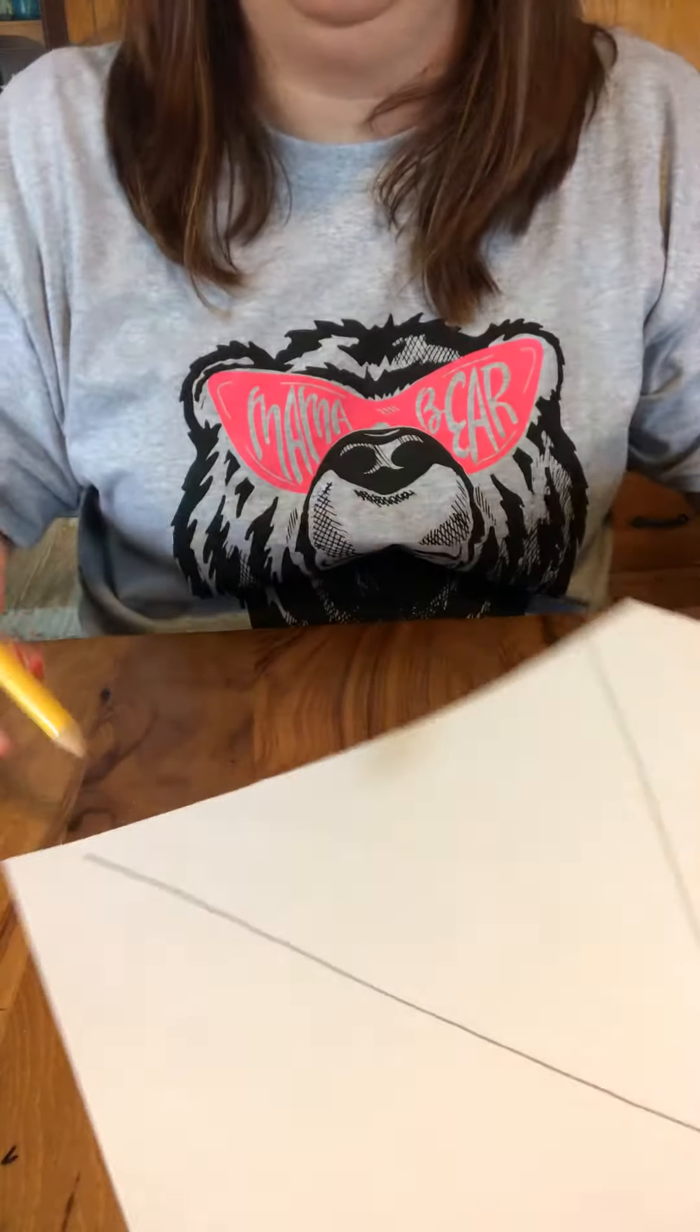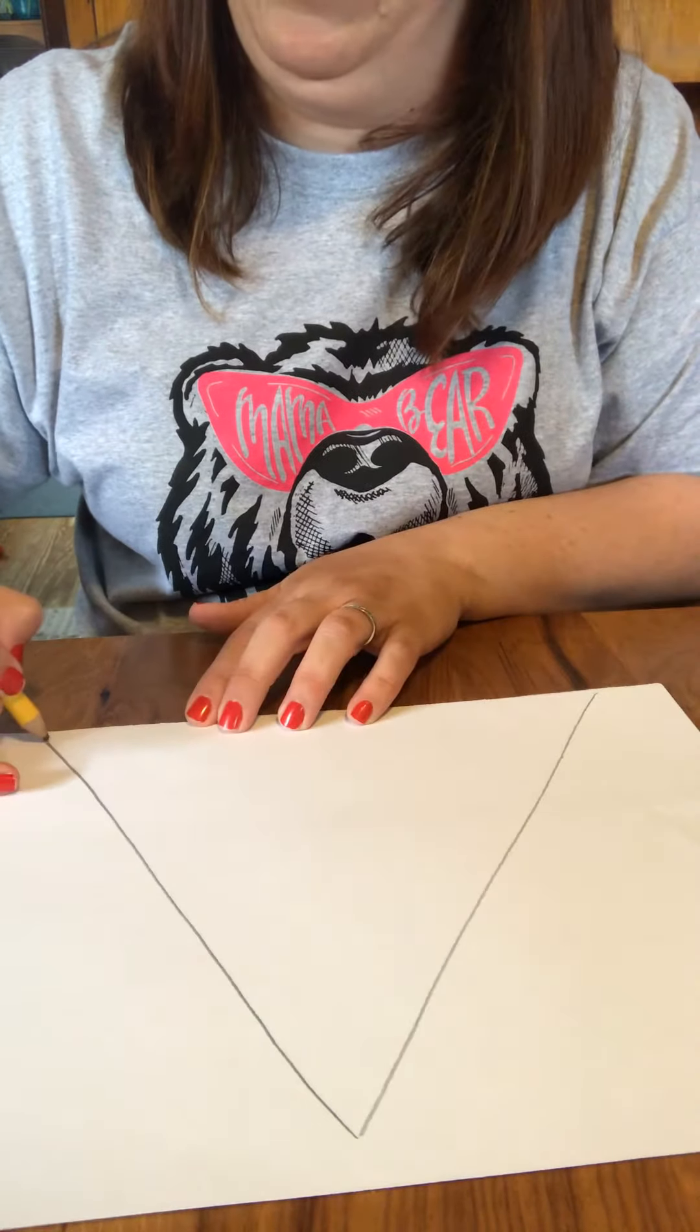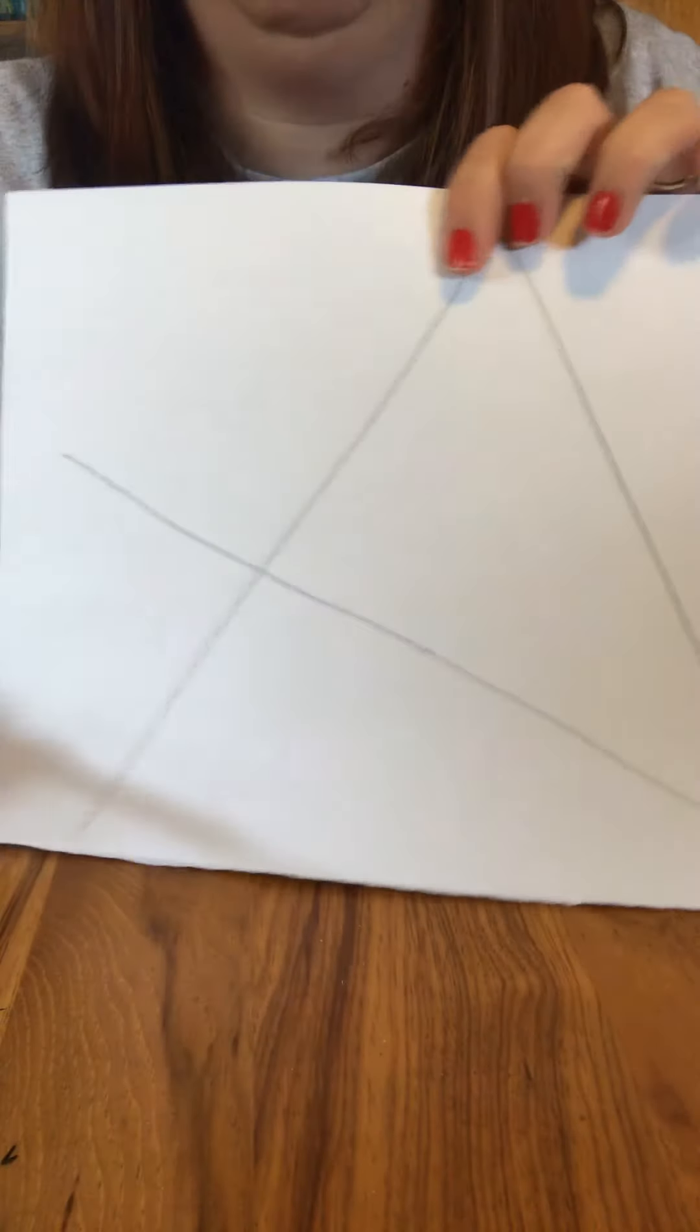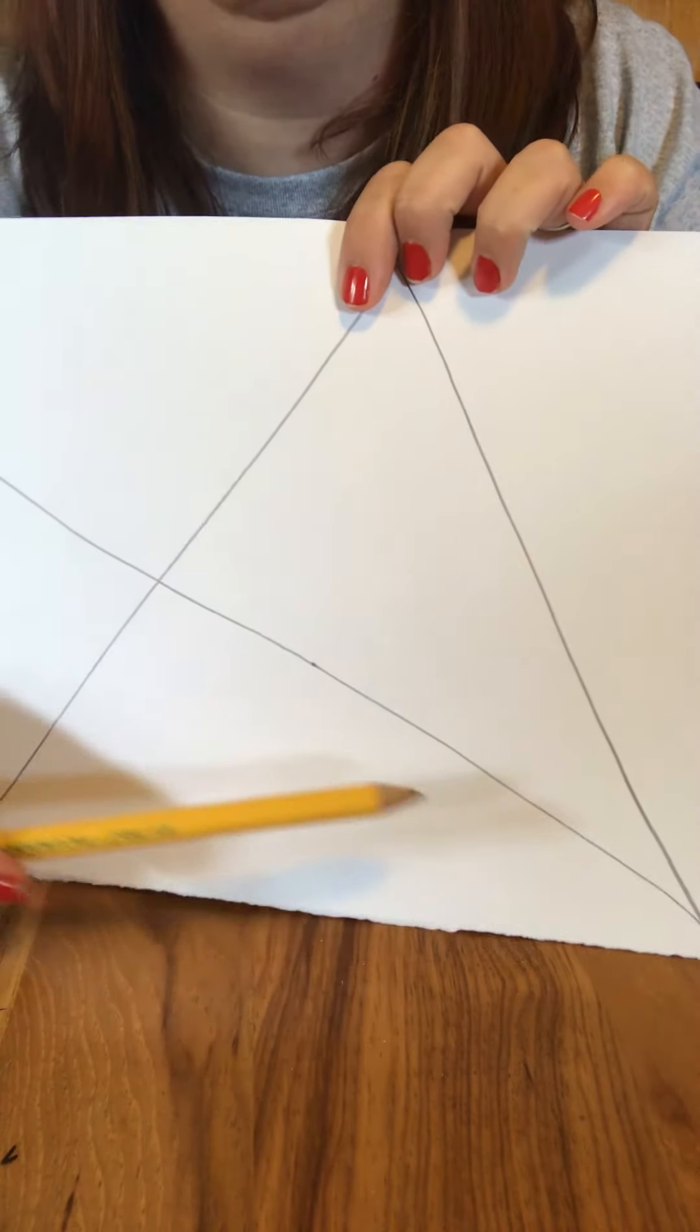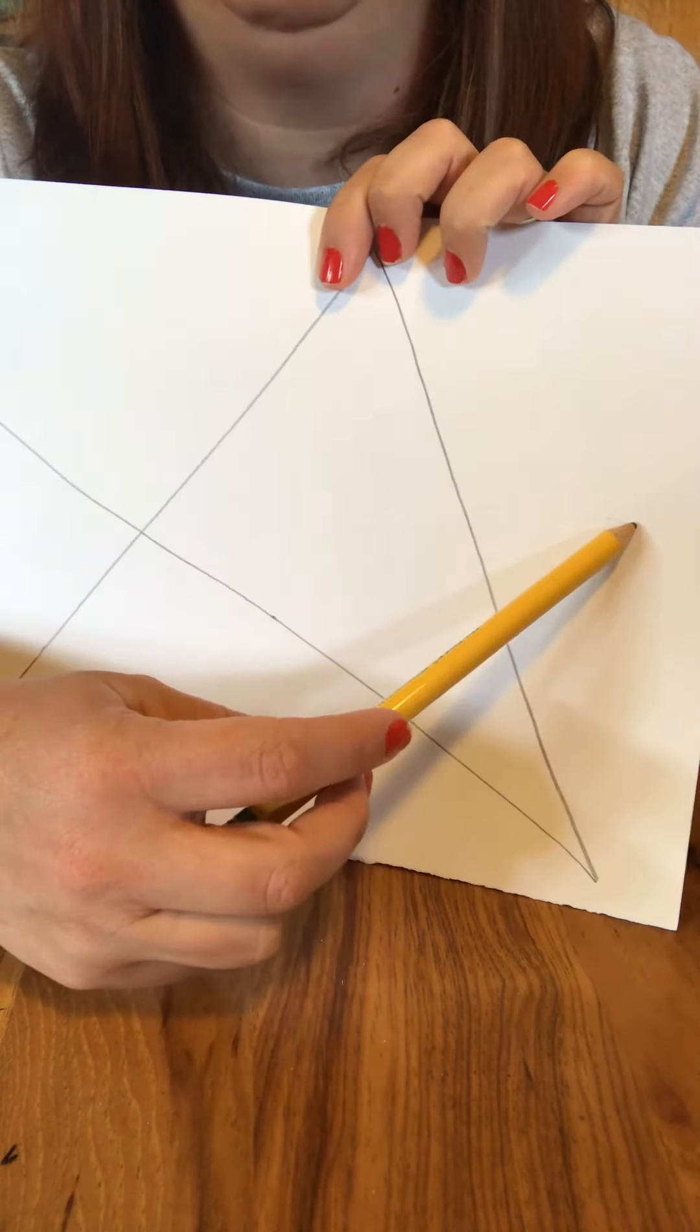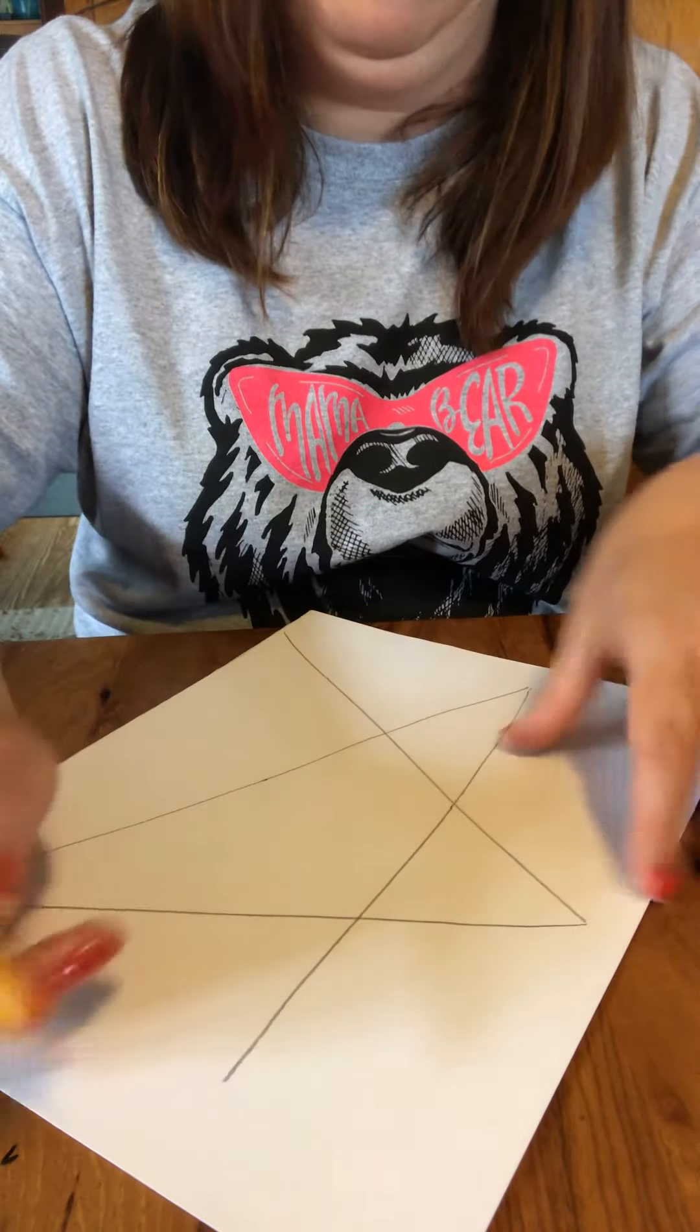Now we're going to take this side down here and we're going to bring it over this way. So we went from here and we drew our line over to here. Now we're going to go from here and go straight across over to here like that.